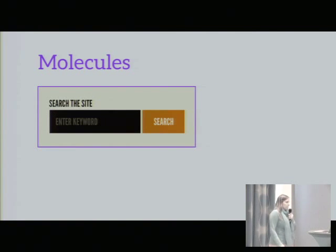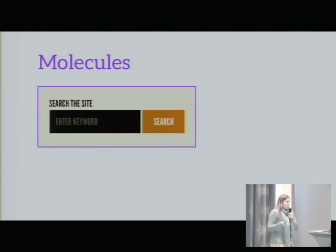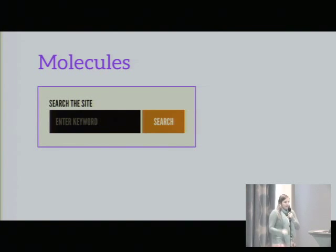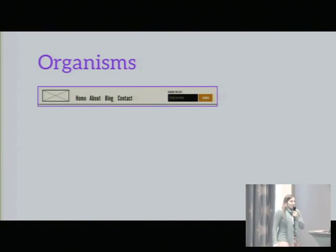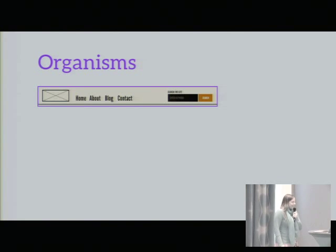The next thing would be a molecule. Molecules consist of different atoms. For example, like you see there, a search box element — you have a label above, an input field and a button next to it. That might be a molecule. You see, it grows bigger. And the next thing — it's a bit small, I'm sorry. By the way, thanks to Brad Frost for those little screenshots. I think everybody uses those in atomic design talks.